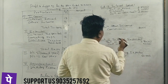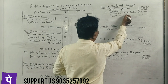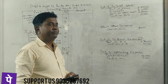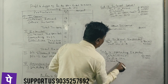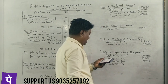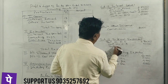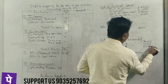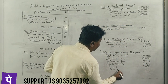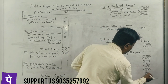Rent and taxes: $1,50,000. Interest on overdraft: $16,000. Director's fees: $4,000. Auditor's fees: $2,000. Interest on ESP deposits: $60,000. Postage and telegram: $1,000. Printing and stationery: $2,000. Sundry charges: $1,500.